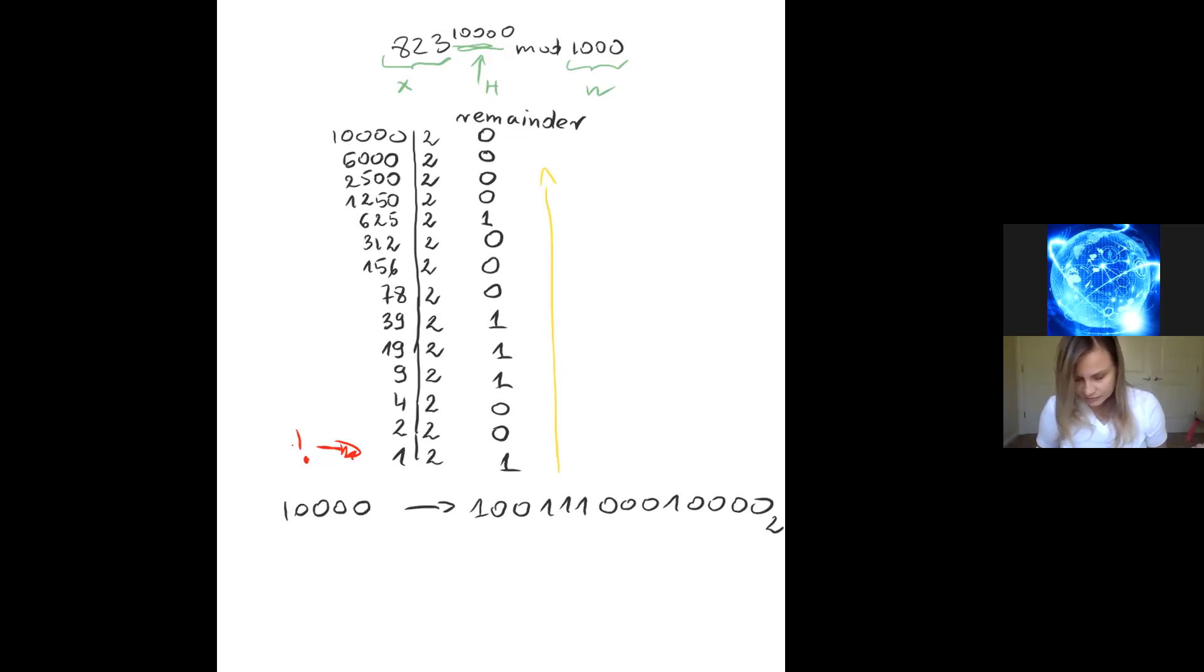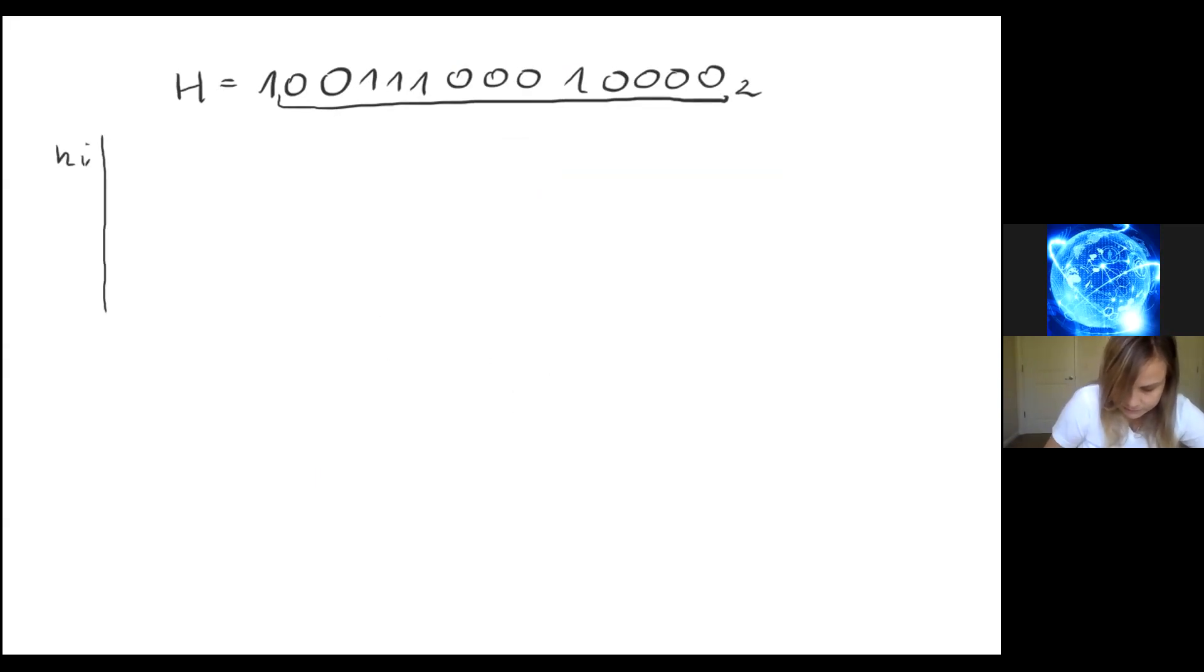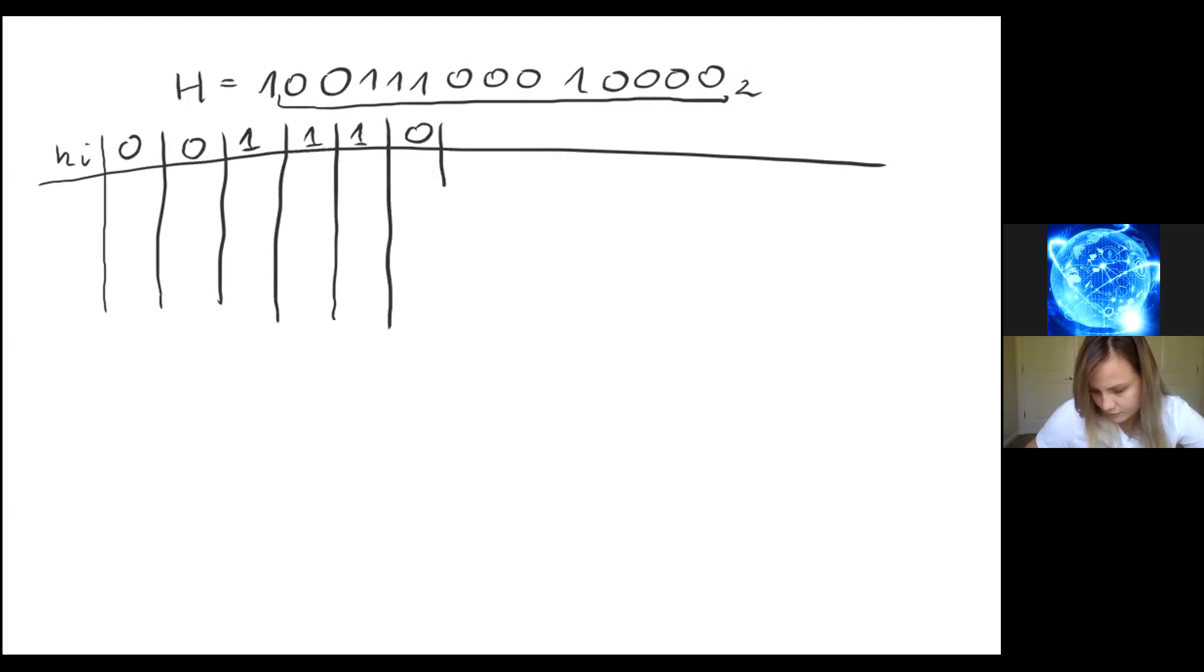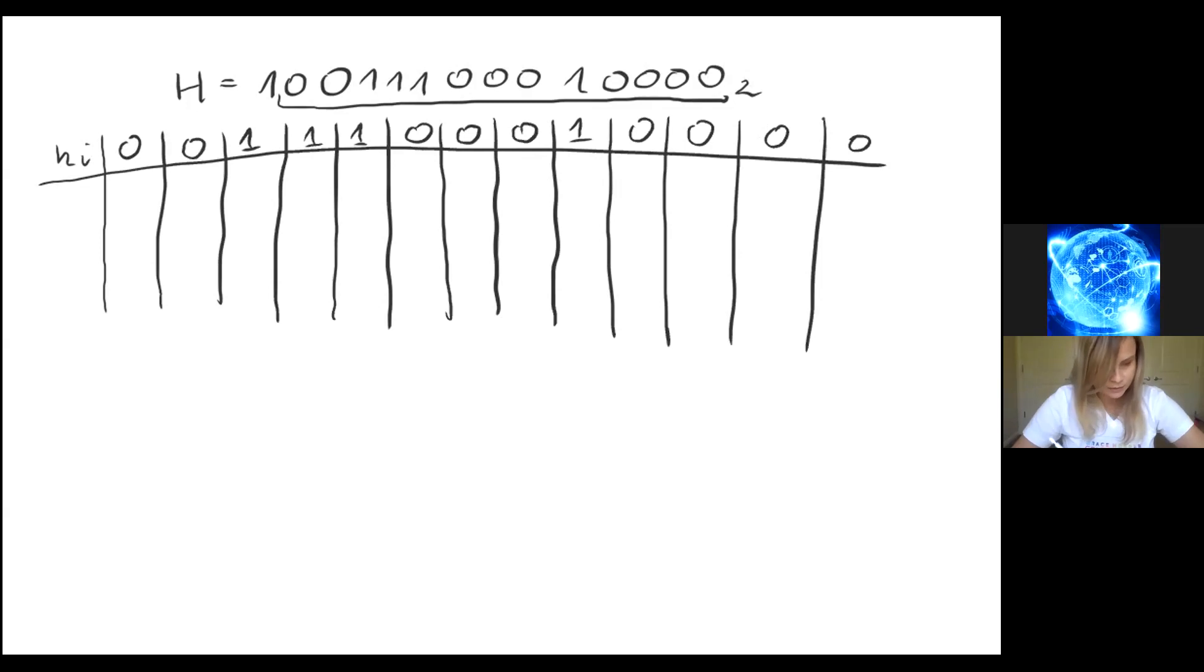This is how you can convert numbers from decimal format to binary format. We have this nice representation, now we can actually compute our result. So we have 1 0 0 1 1 1 0 0 0 1 0 0 0 0 0. Those bits that are important for us - the most significant bit doesn't matter. We can do that in a table. So in the table we will have h_i.